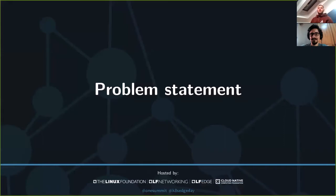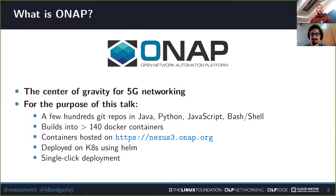First of all, the problem statement. Usually when people talk about license compliance, they are thinking about corporate environments. But here we are dealing with license compliance in the open source project called ONAP. You've probably heard about it as it's a center of gravity for 5G networking. ONAP, from the perspective of license compliance, consists of a few hundred Git repos in Java, Python, and a few other languages. They build into over a hundred Docker containers, which are hosted on our own Nexus instance that is publicly available. And ONAP can be deployed using single-click deployment thanks to Helm.